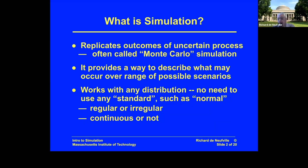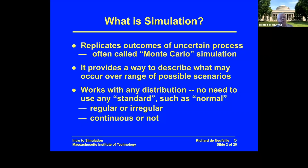It can be continuous or not. It could be bimodal — mostly about one outcome or mostly about another outcome, sort of a two-state device with uncertainties. So the simulation works for any distribution that's available, and it can accommodate many things being uncertain simultaneously.